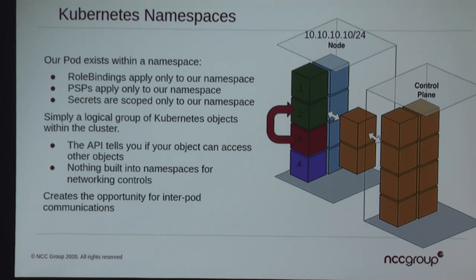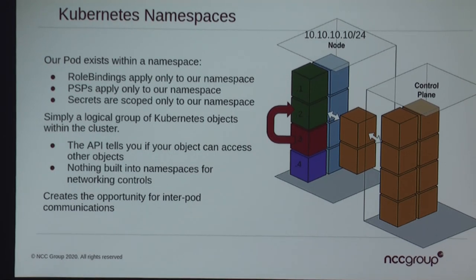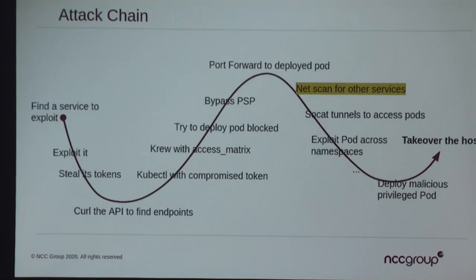This is the huge takeaway: namespaces are just a logical separation — this is not a security boundary. This is a logical grouping, more like a folder. There are no network controls on any of this stuff. As I'm doing a port scan in the background, there's nothing preventing one pod from accessing another pod. A namespace alone cannot provide that. We can do things like Istio and Envoy that attempt to do that, but by default none of that is possible.